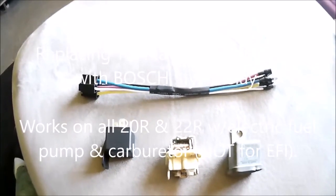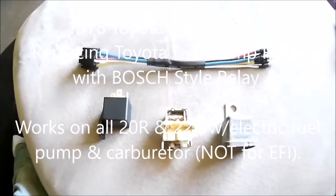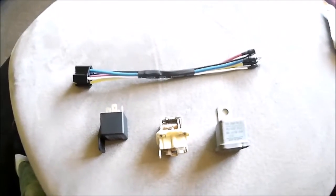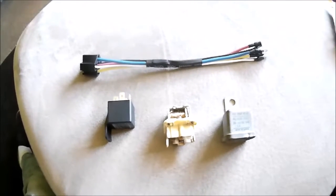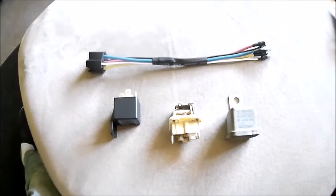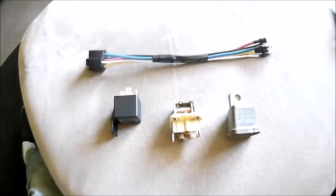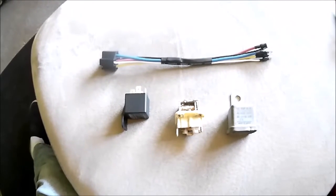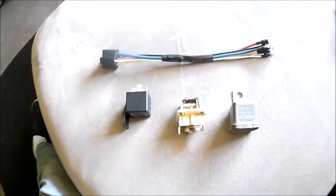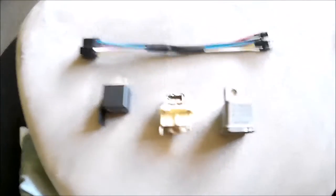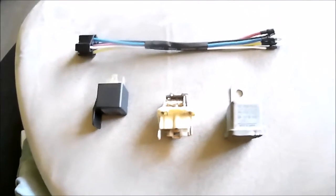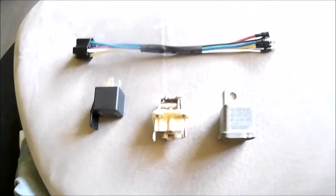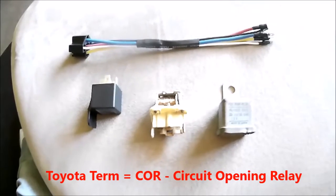We're back again with the 1978 Toyota pickup truck, 20R engine, five-speed transmission. Hopefully this is the last part of the ignition system problem. Everything has been replaced down to this part - this is a fuel pump relay, though Toyota calls it a circuit opening relay.